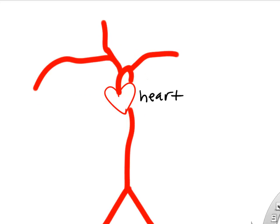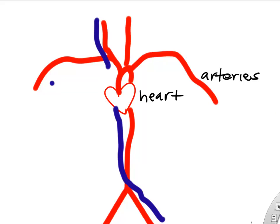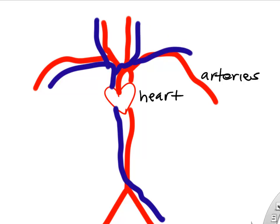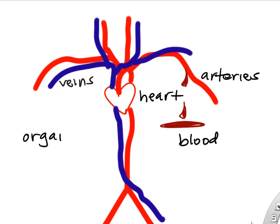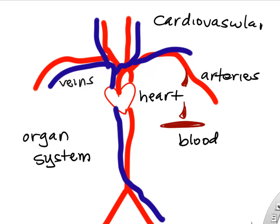Throughout the semester we're going to organize organs that function together. For example, the heart, arteries, and veins help comprise an organ system called the cardiovascular system. We're going to talk a lot about organ systems as we go through the course, and often one or two lectures will cover an organ system. The cardiovascular system includes your heart, blood vessels, and blood.